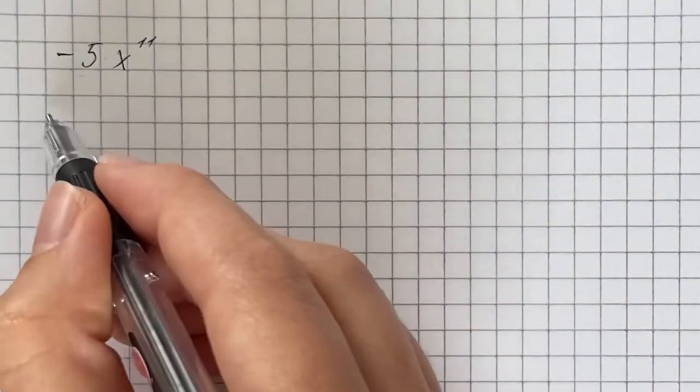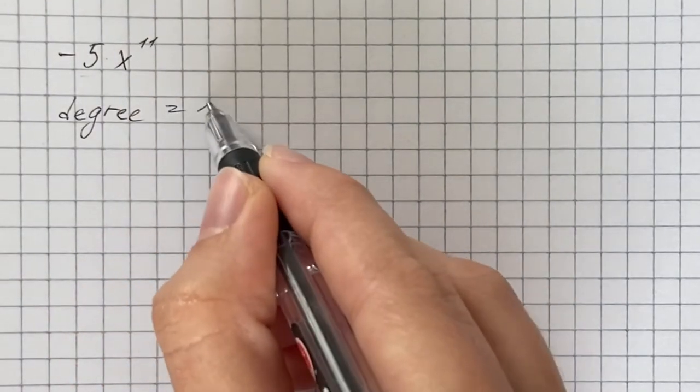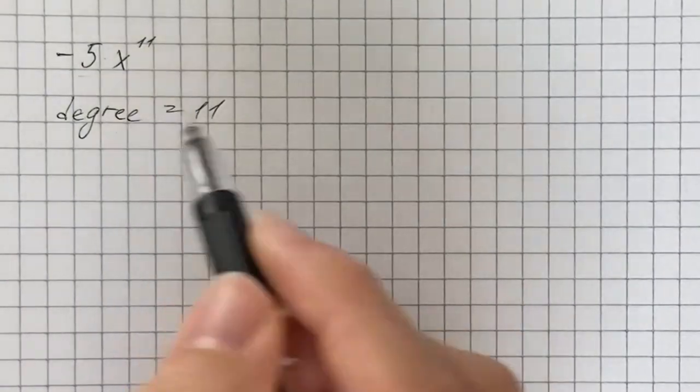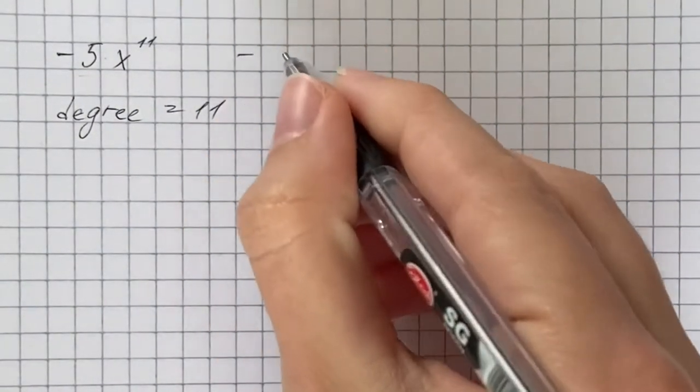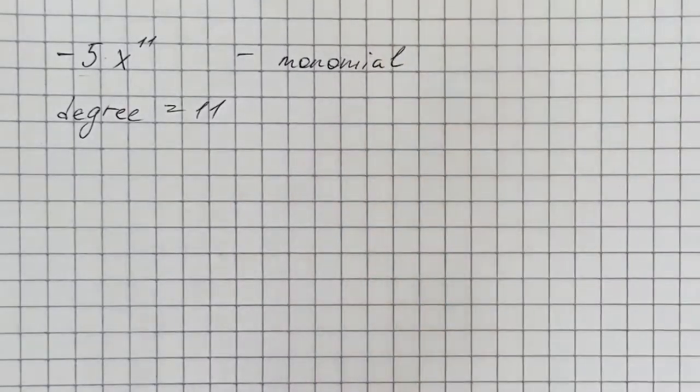Therefore, degree of the given monomial is 11. That's going to be our answer. Thank you.